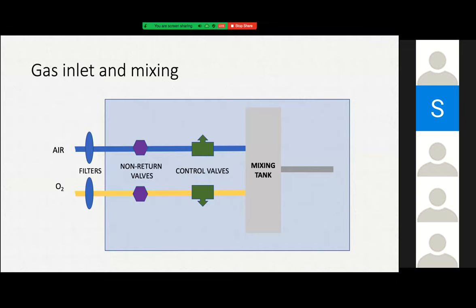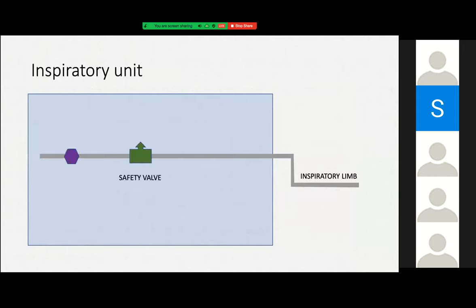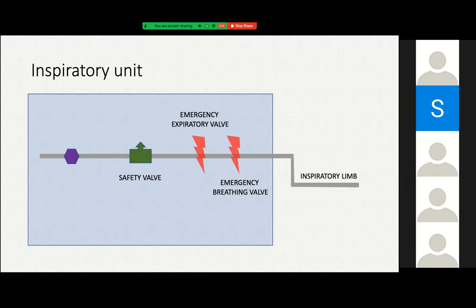The non-return and control valves are solenoid valves, which I will discuss later. Once the proportions of air and oxygen enter the mixing tank, the flow to the inspiratory limb is regulated by a mixed gas metering valve, controlled by the computer software. Beyond the regulatory valve, there is a safety valve to regulate flow into the inspiratory limb. Some ventilators also have an emergency expiratory valve and an emergency breathing valve, though their location may differ across ventilators.